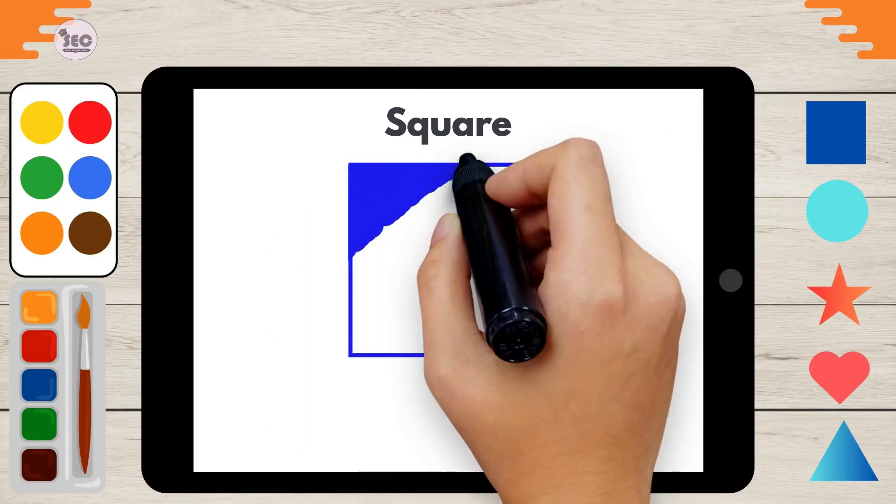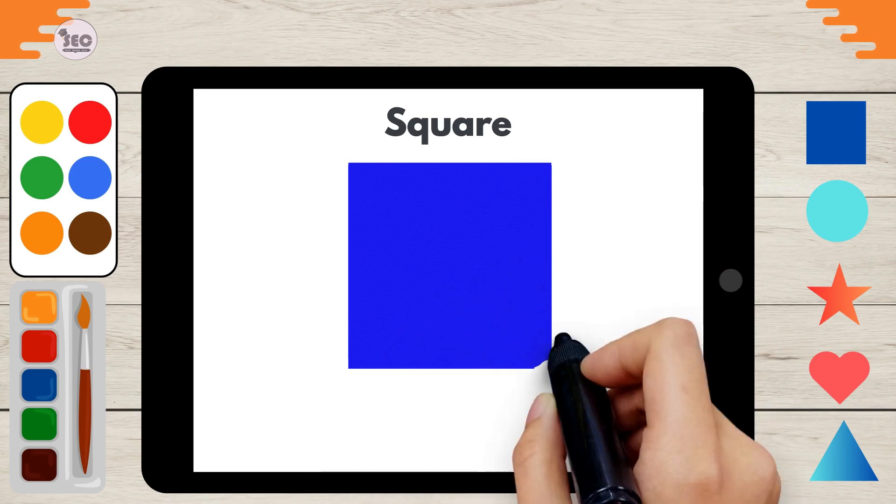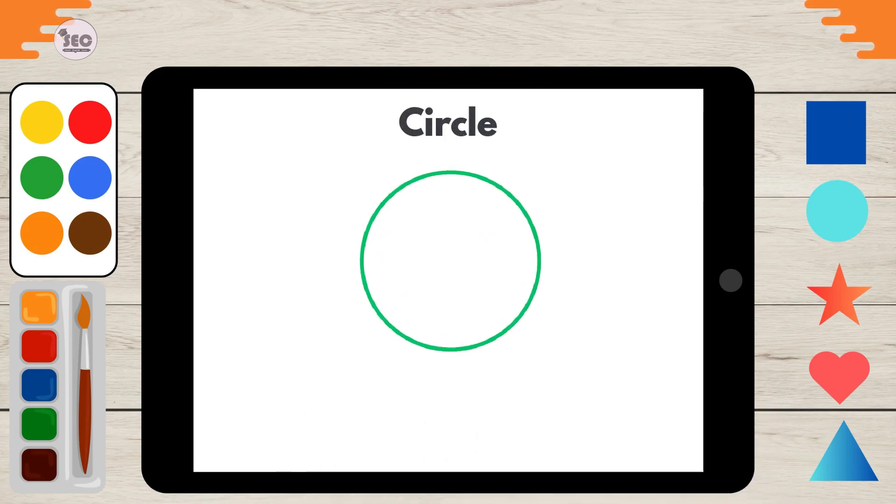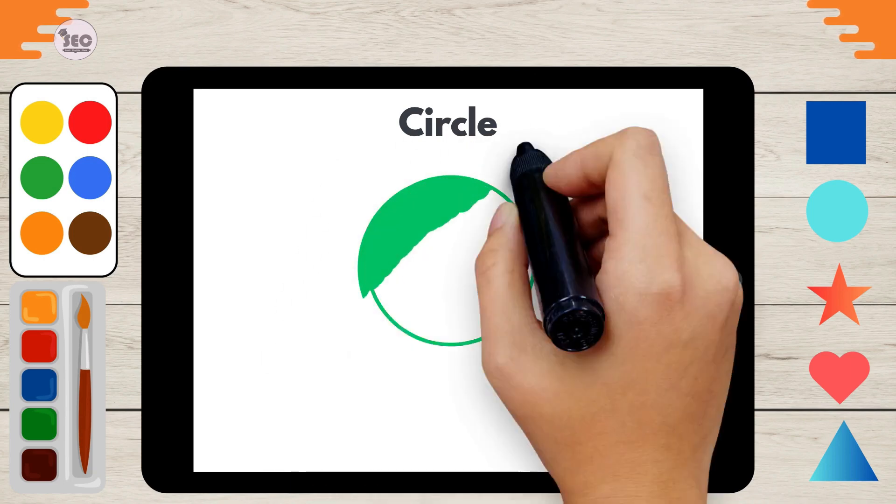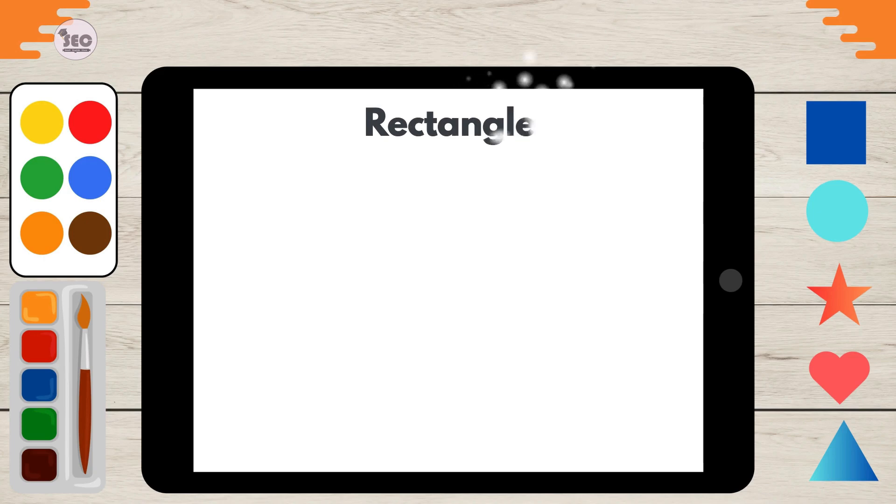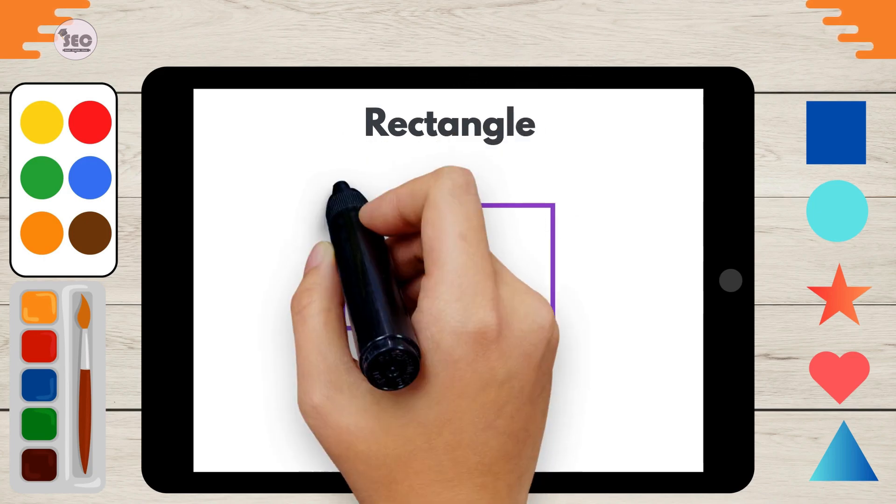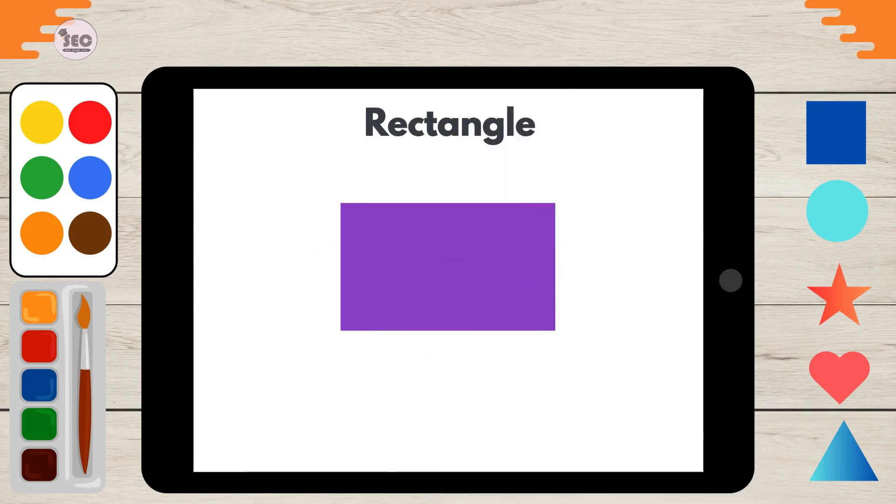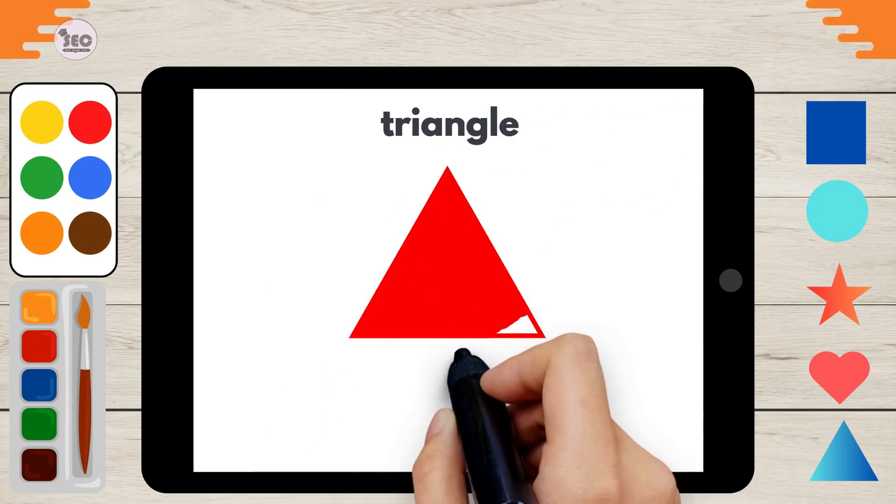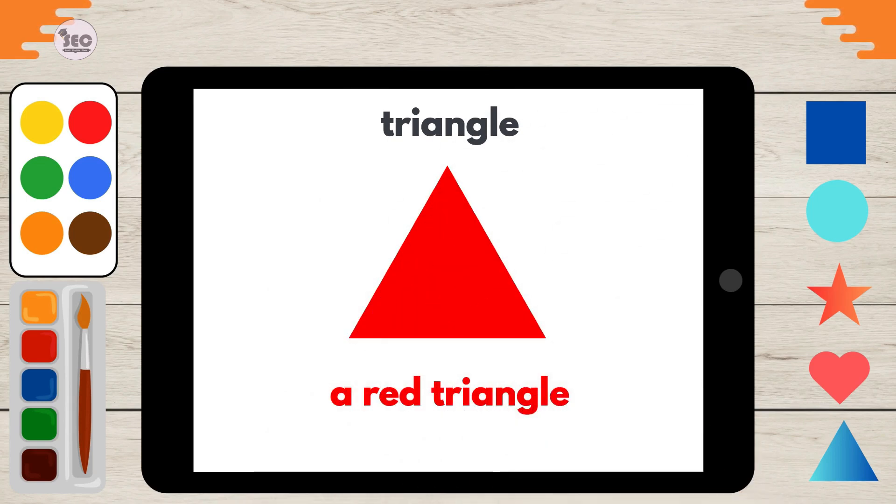Square. A blue square. Circle. A green circle. Rectangle. A purple rectangle. Triangle. A red triangle.